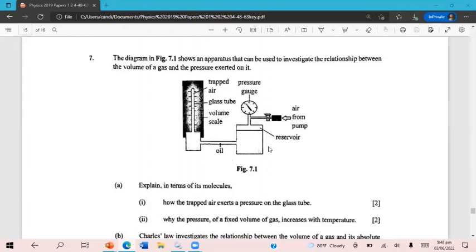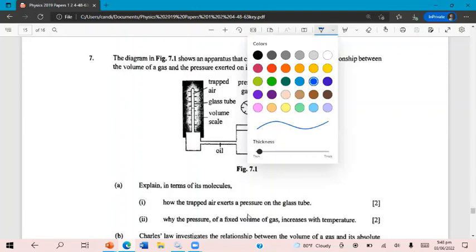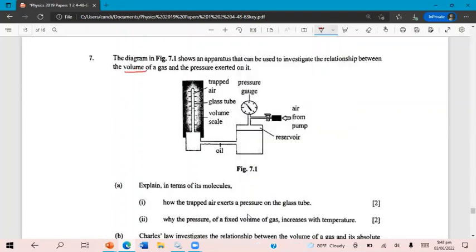So the first question we're asked, and before you get confused, remember that pressure and volume, immediately you should be thinking right now, which law? You might not be familiar with this experimental setup, but this is pressure and volume, so we're talking about Boyle's Law. The first two questions were asked, explain in terms of its molecules, how the trapped air exerts a pressure on the glass tube.